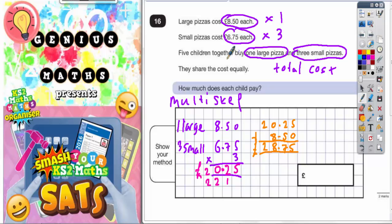It does say they share the cost equally, and there are five children. So we need to share this total cost by five. In other words, divided by five. We can do this with a bus shelter method. So it's going to be £28.75 divided by five.